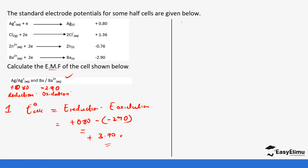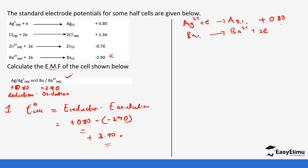Using the second method, we write the half cell equations. For the reduction half cell: silver ions gain an electron to form silver solid, electrode potential +0.80. For barium undergoing oxidation — the standard equation shows barium gaining electrons to form barium solid, but we must reverse it: barium solid loses electrons to form barium ions plus two electrons. Our sign changes from negative to positive 2.90. Adding the electrode potentials gives +3.70 volts — the same result.